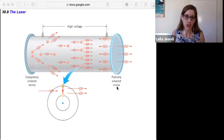One side is only partially silvered, so it can let some of the photons pass through, and that becomes the laser beam, which is actually quite narrow and is monochromatic. It's a single wavelength because all of these photons are exactly in phase and identical, which is quite remarkable.